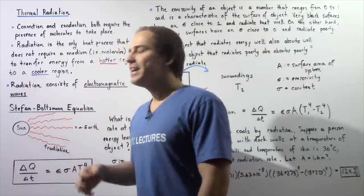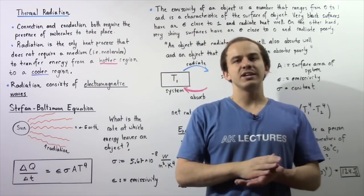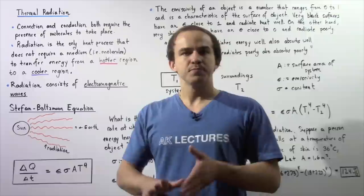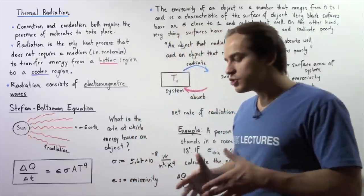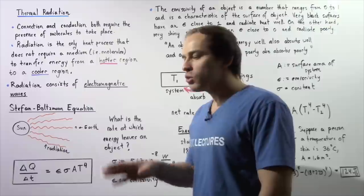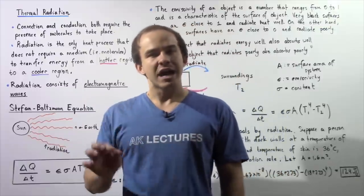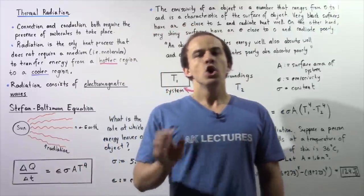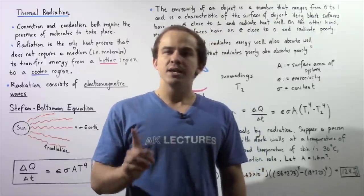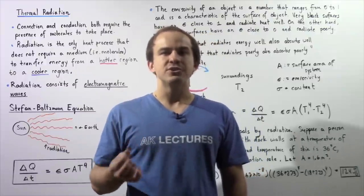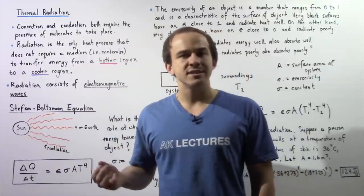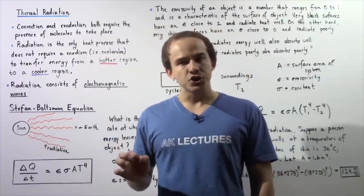Radiation consists of electromagnetic waves such as light waves and infrared waves. Every object is capable of radiating to some extent. The only time an object does not radiate energy is when it is at absolute zero. But because absolute zero is essentially unattainable, every object radiates energy to some extent.